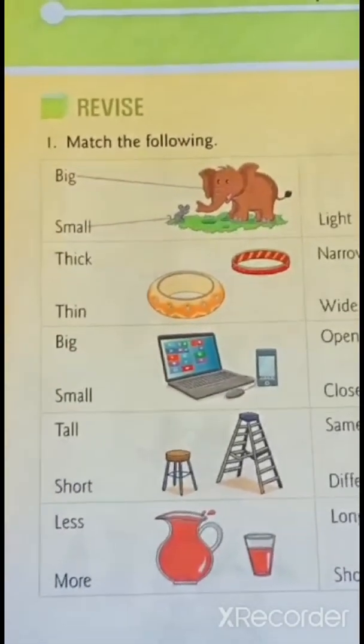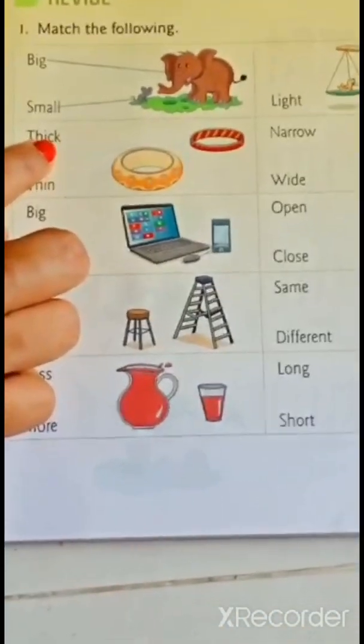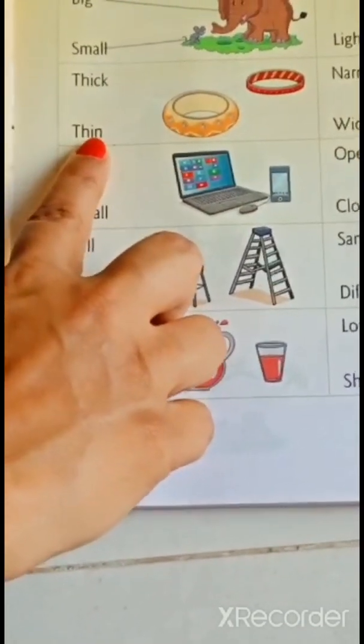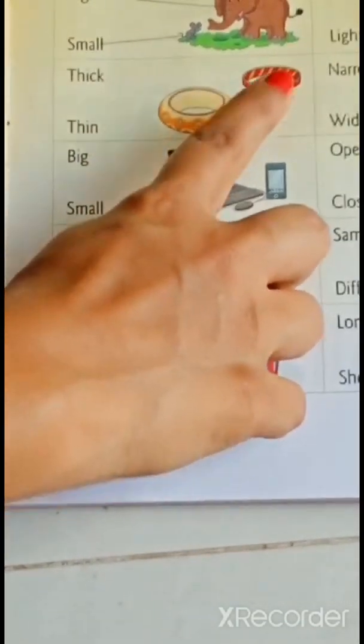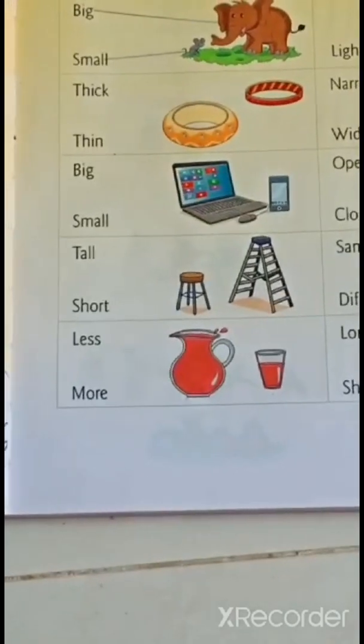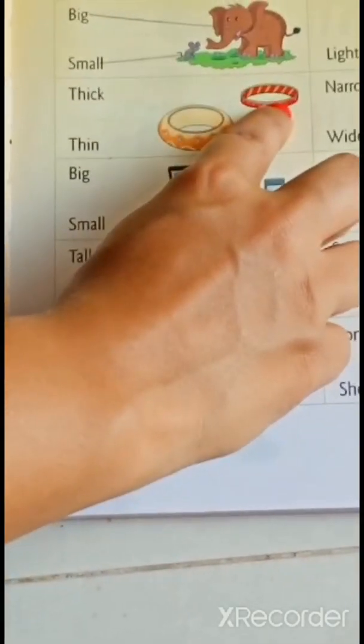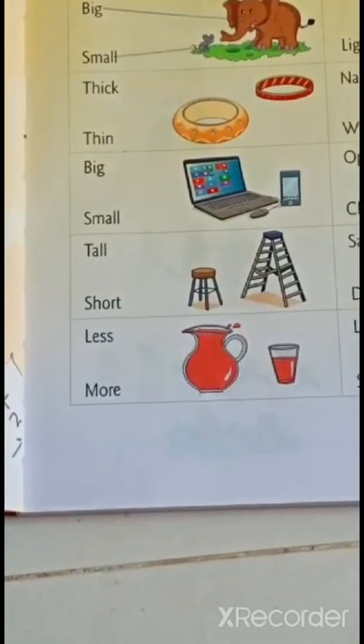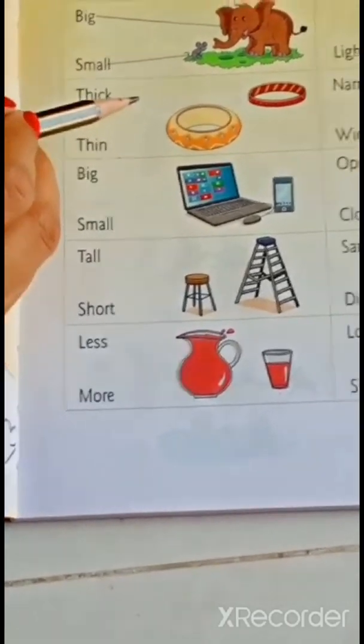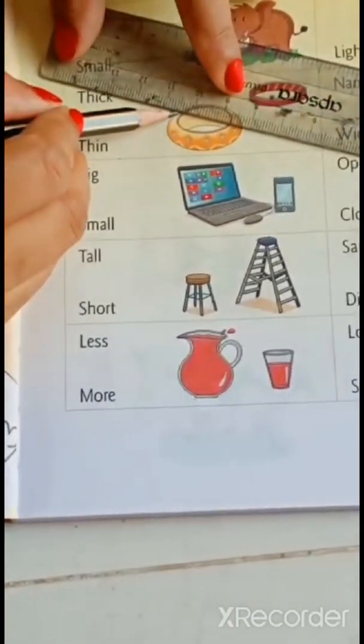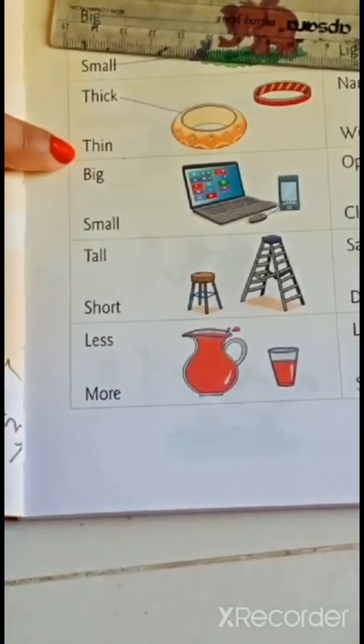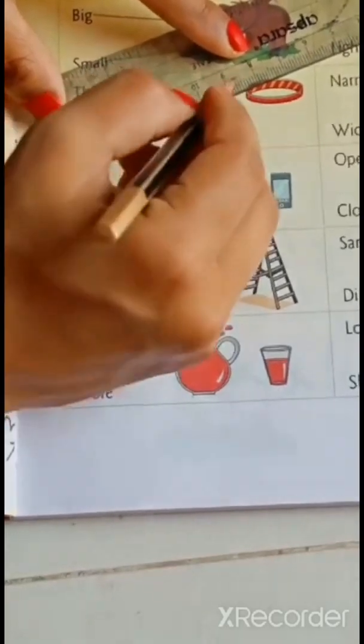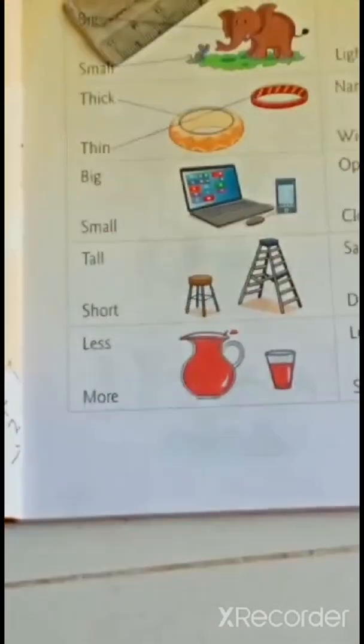Now, next is T-H-I-C-K thick. And T-H-I-N thin. Bangles are given here. So, which bangle is thick? This one or this one? Yes. This bangle is thick. So, join T-H-I-C-K thick with thick bangle. And T-H-I-N thin with thin bangle using scale. This way. Okay.